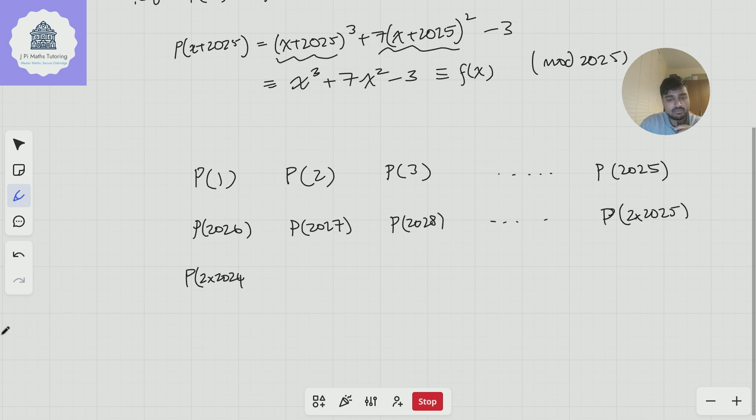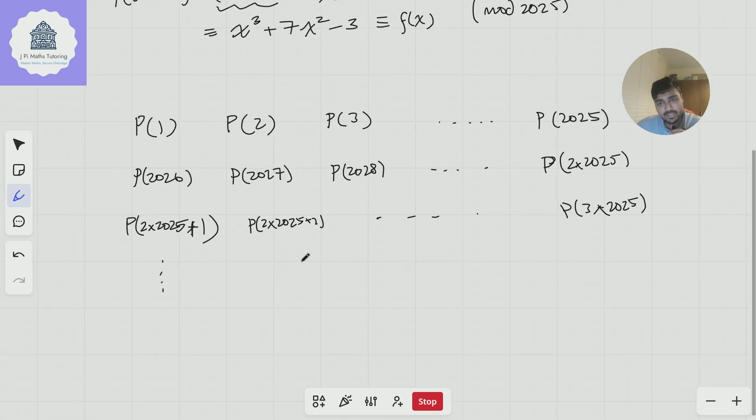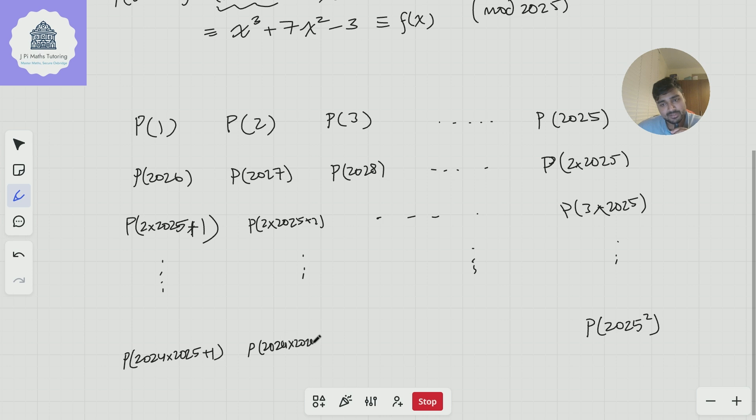The next row is going to be p of 2 times 2025 plus 1. This will be p of 2 times 2025 plus 2, and so on. This is 3 times 2025, and I'm going to keep drawing this table, and I'm going to bring it down, and I'm going to keep going until I get to this bottom right element, which I want to be p of 2025 squared. So this one here will be p of 2024 times 2025 plus 1. This will be p of 2024 times 2025 plus 2, and so on, all the way across.